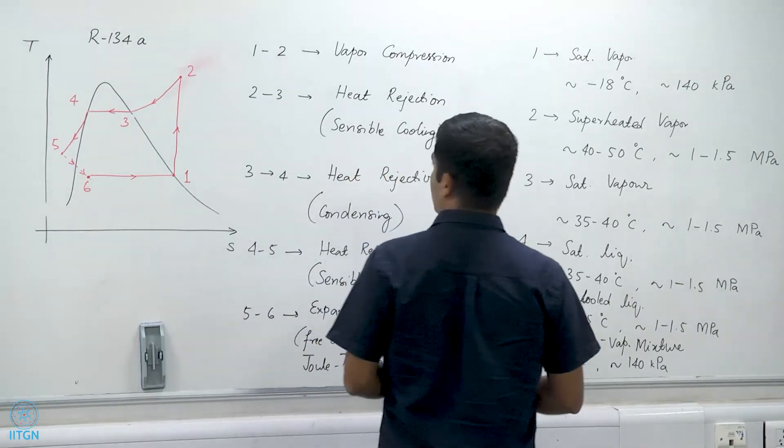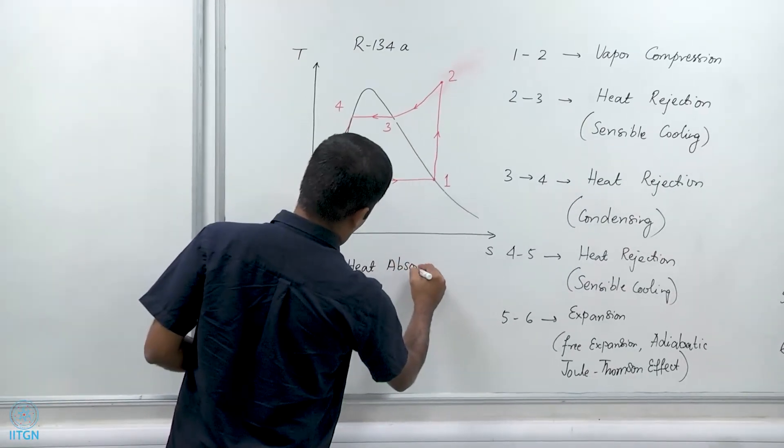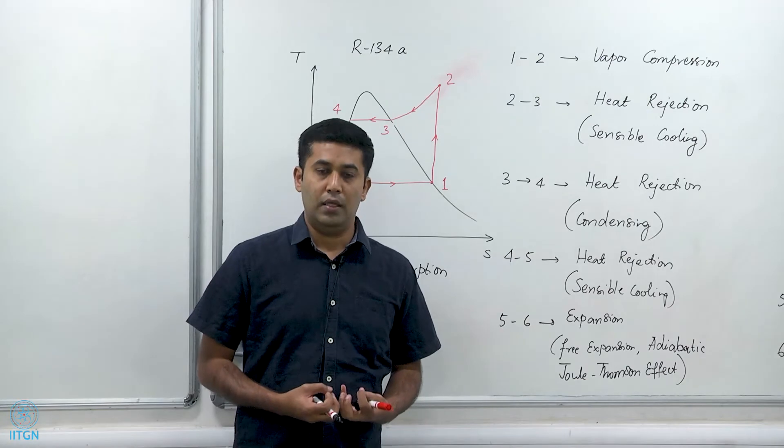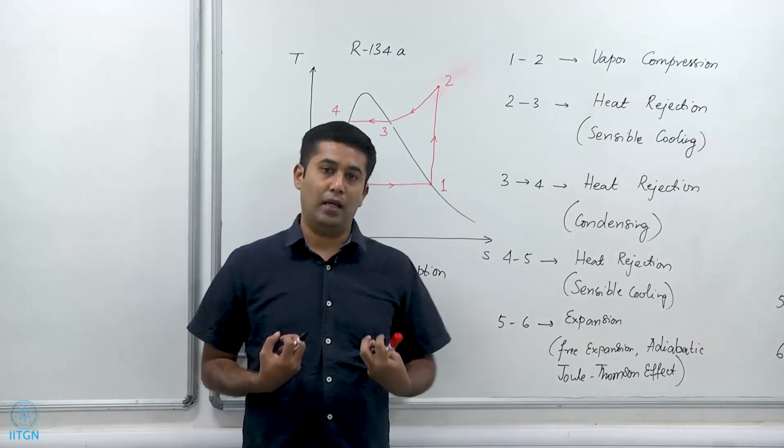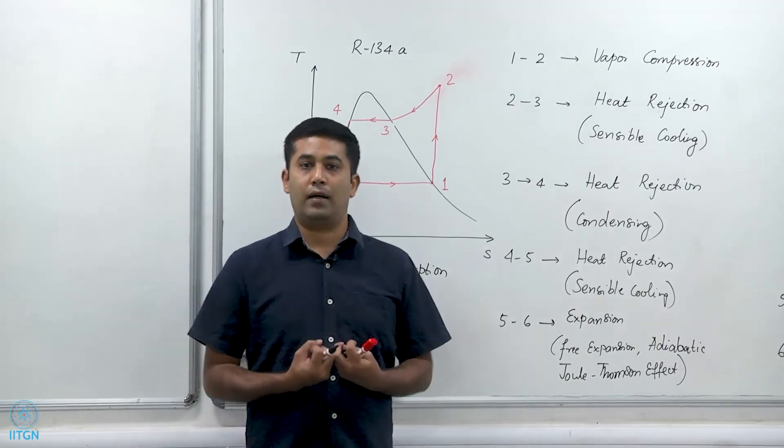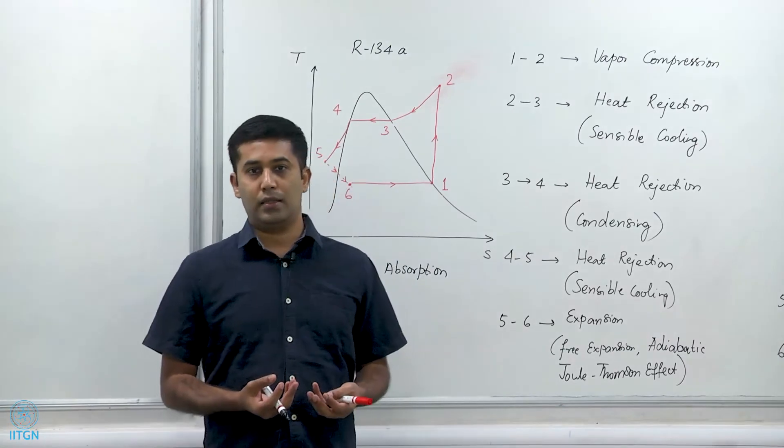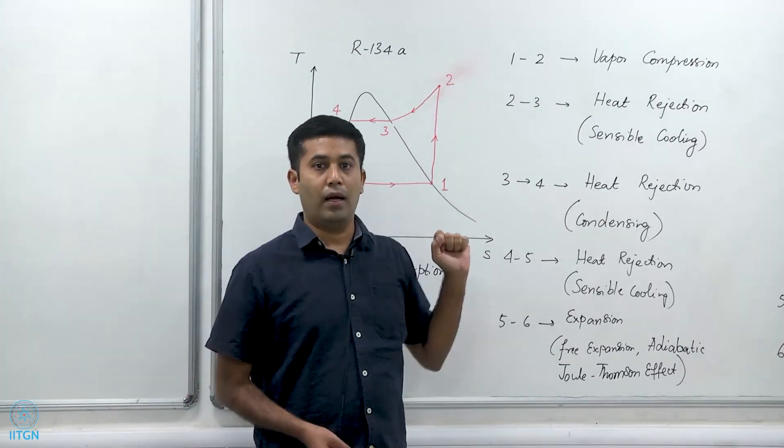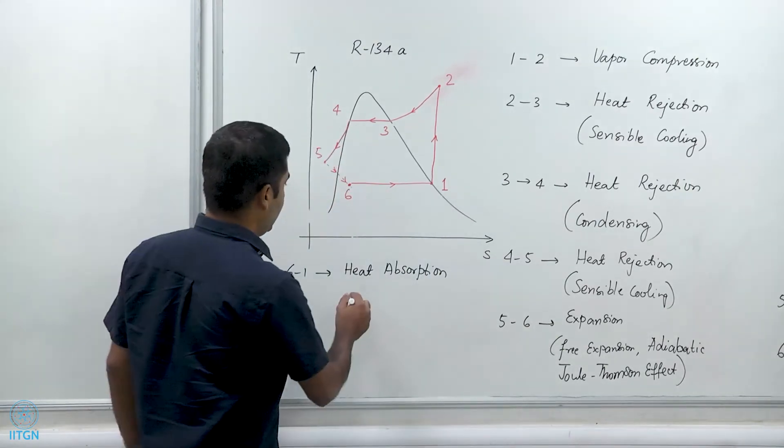Then 6 to 1 is heat absorption. This, in other words, is inside the refrigerator, basically trying to cool down the refrigerator by absorbing heat from the contents of the refrigerator. Or if we are talking about an air conditioner, then this is the unit 6 to 1 that is inside the house, which is called the evaporator. This is where the refrigerant evaporates by absorbing heat from the air inside the room or from the objects inside the fridge and evaporates to become a saturated vapor. The unit that is outside is called a condenser because that is the unit in which the refrigerant condenses from a superheated vapor to a subcooled liquid and in that process rejects heat to the atmosphere or to the room, whichever is the case. So this is the heat absorption step and this is evaporation.